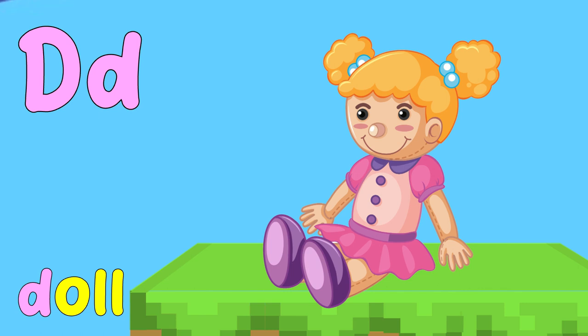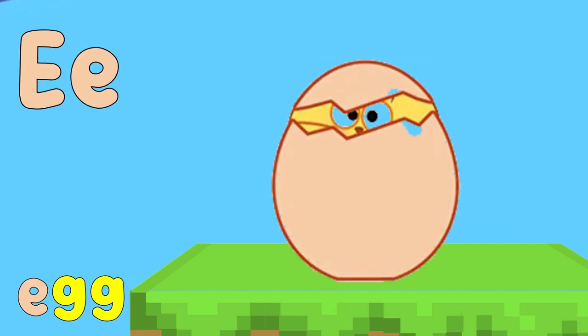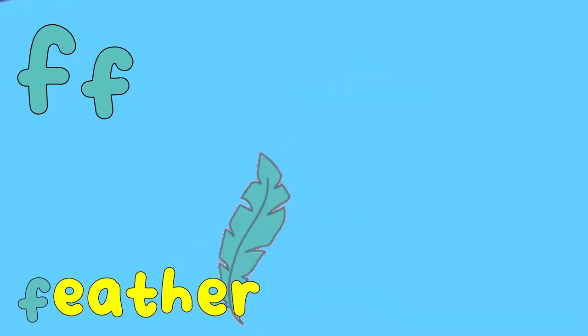D is for doll, d, d, d. E is for egg, eh, eh, eh. F is for feather, f, f, f.